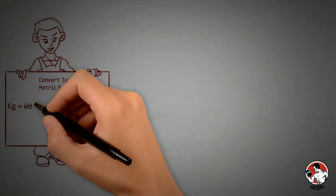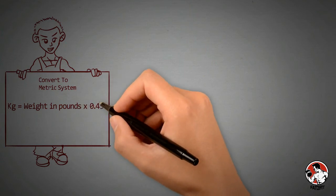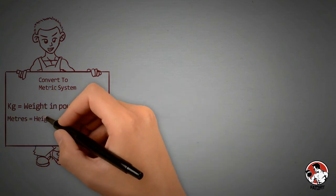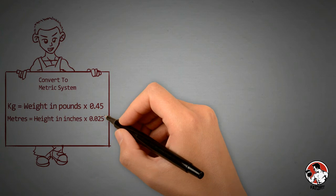To convert pounds to kilogram, multiply your weight in pounds by 0.45. To convert inches into meter, multiply your height in inches by 0.254.